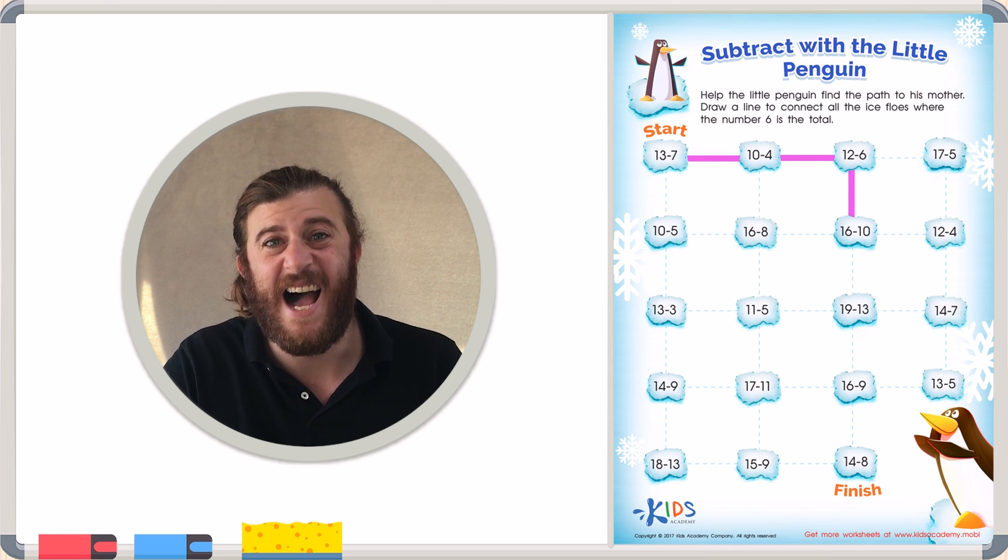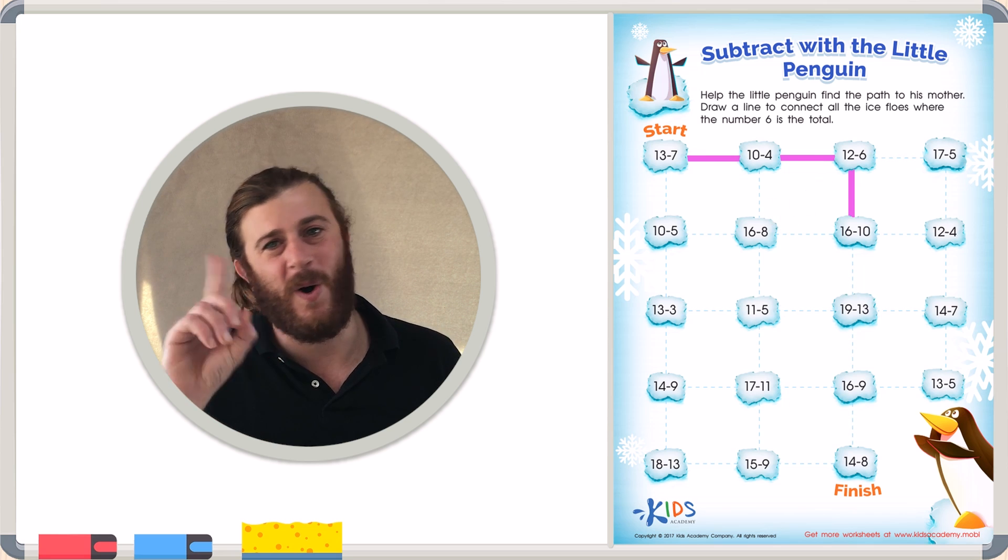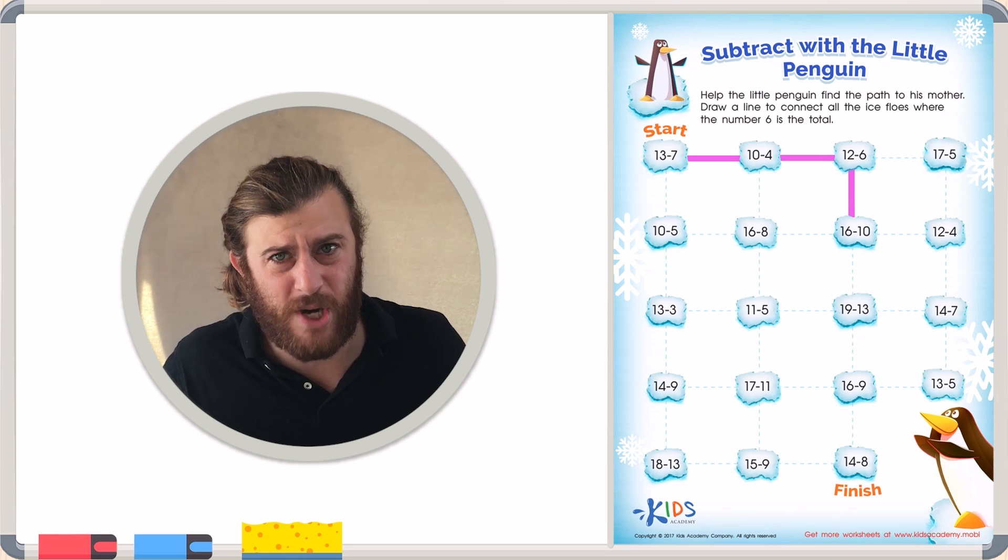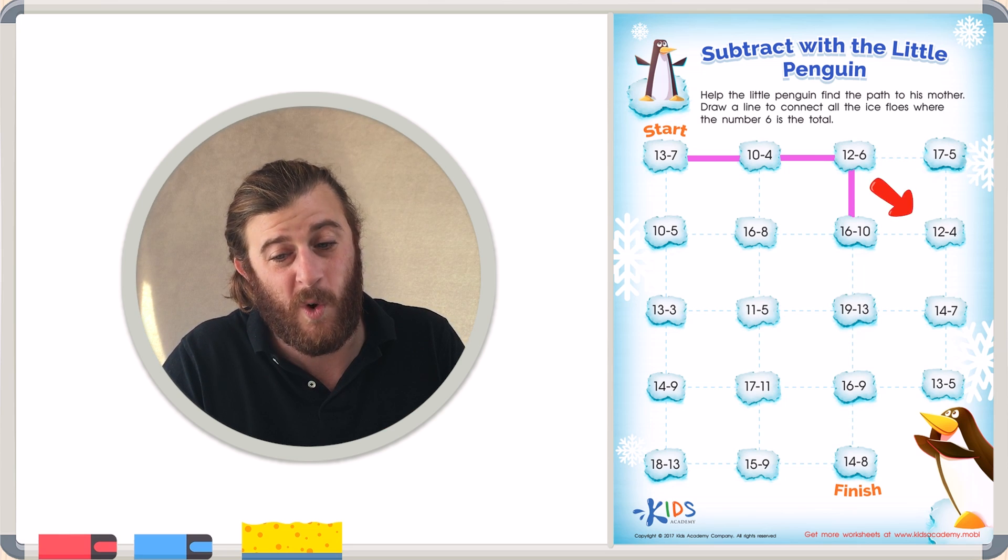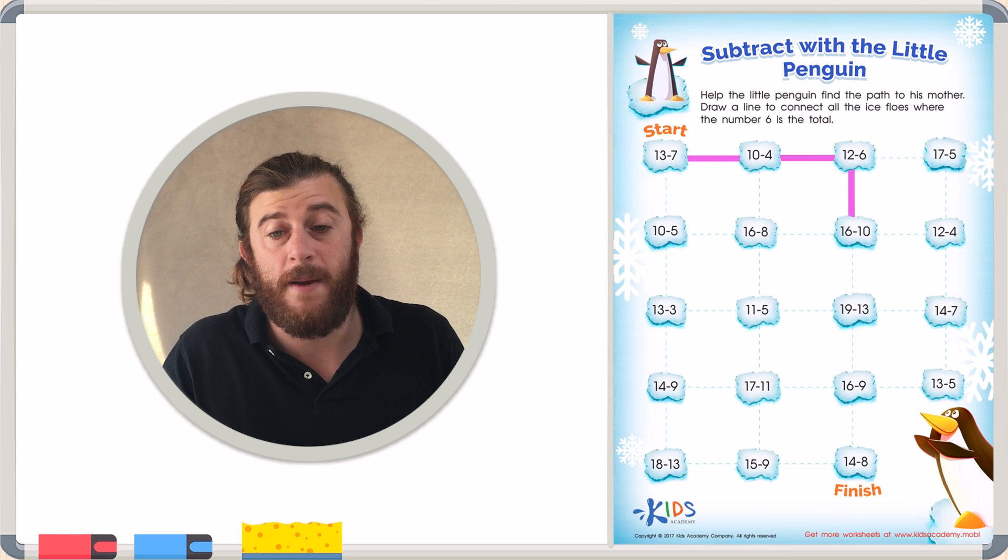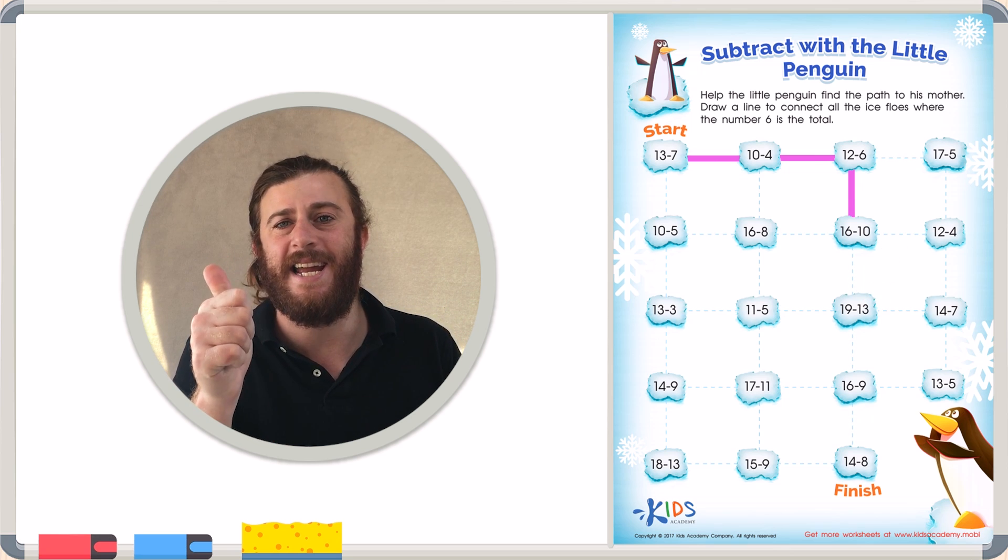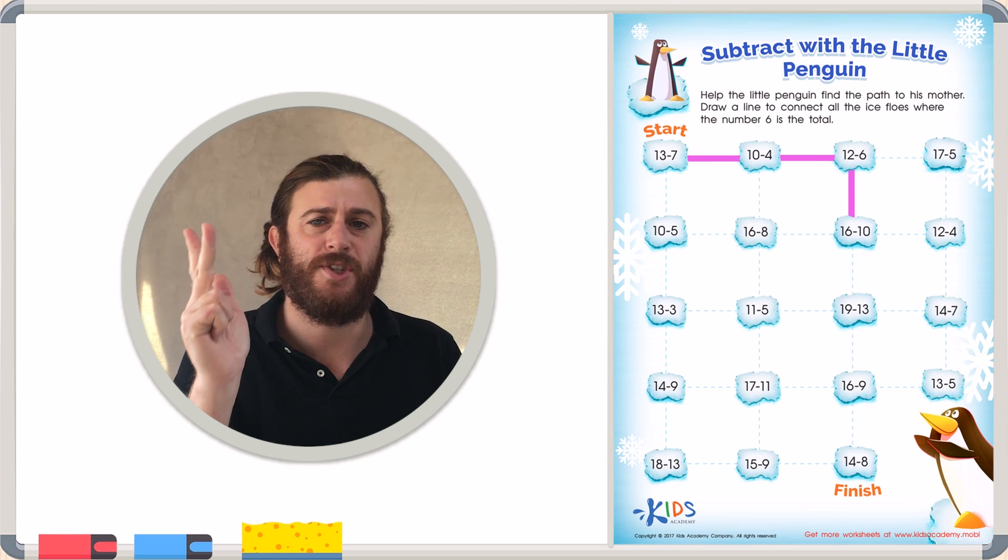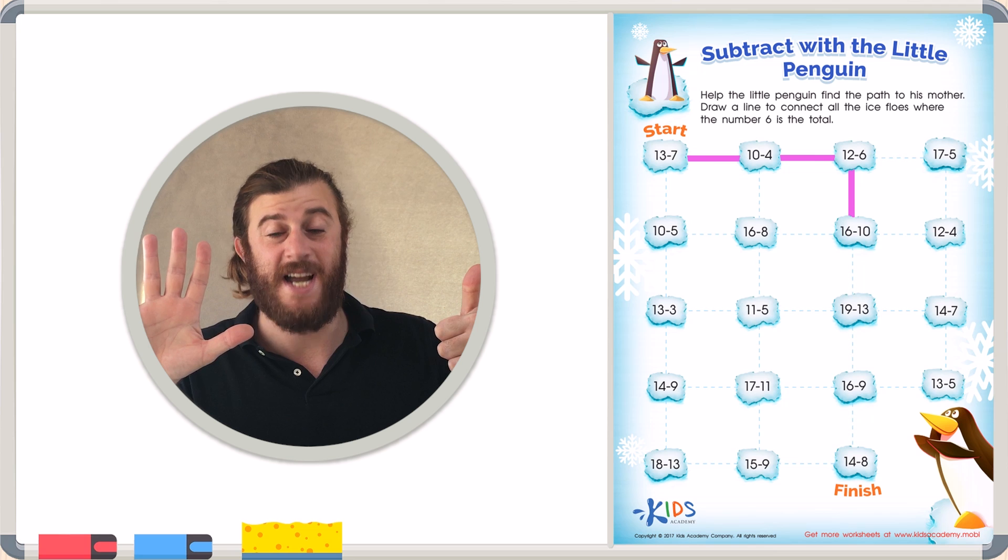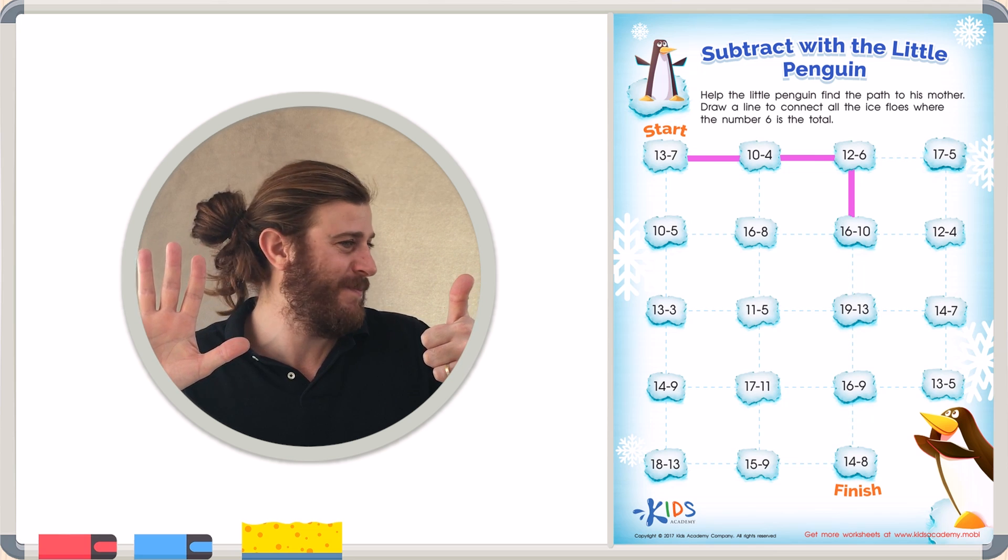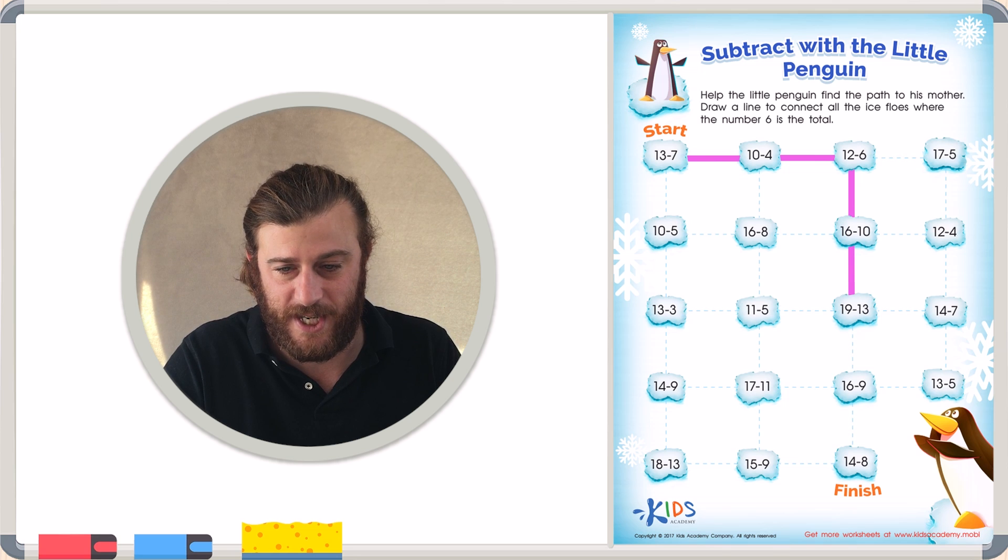Now for this problem, I have three different choices. I can draw a line to 16 minus 8, but I already know that's not the right answer because I tried that for another problem. So I'm left with 12 minus 4 or 19 minus 13. Let's try 19 minus 13. 19, 18, 17, 16, 15, 14, 13. Does 19 minus 13 equal 6? I think so. I have 6 fingers up. Let's draw a line to 19 minus 13.